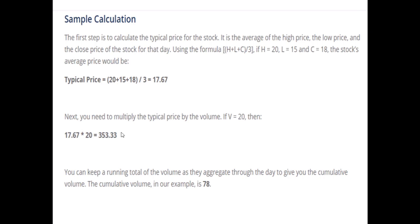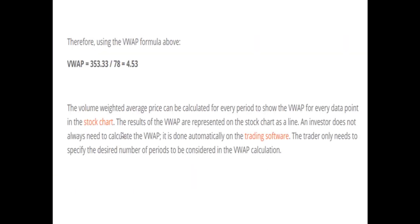You keep a running total of the volume as they aggregate through the day to give you the cumulative volume. The cumulative volume in this example is 78, and therefore using the VWAP formula, the result is 4.53. The Volume Weighted Average Price can be calculated for every period to show a data point on the stock chart.